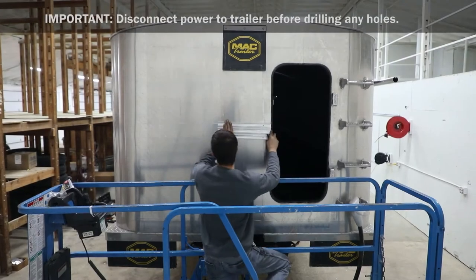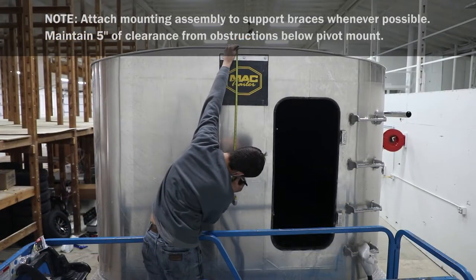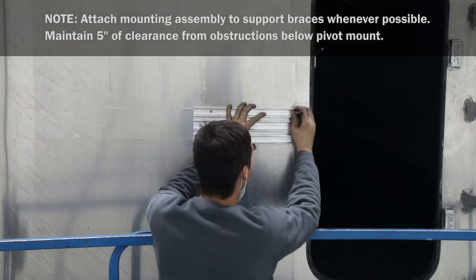At front of trailer, align center point of mounting assembly with centerline of box. Measure down 47 to 55 inches from top of end cap and mark holes in top and bottom groove.